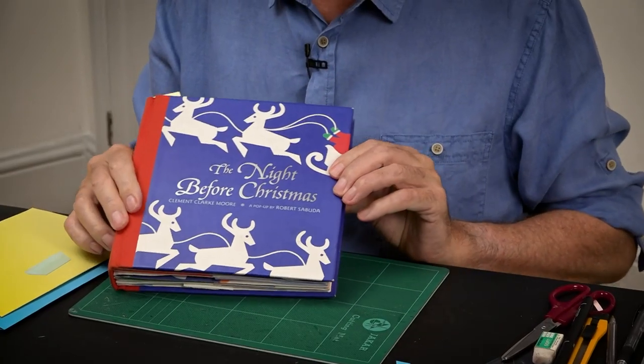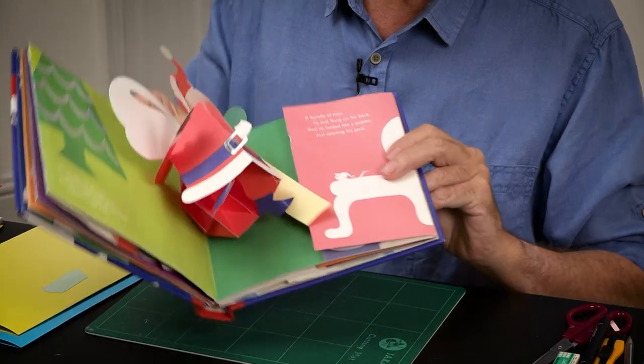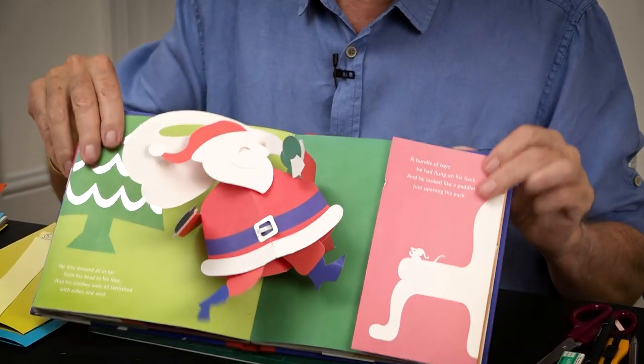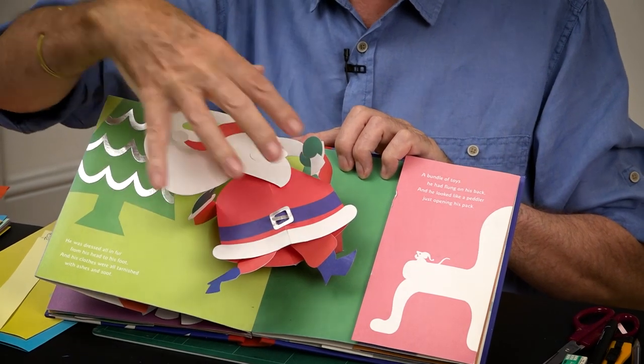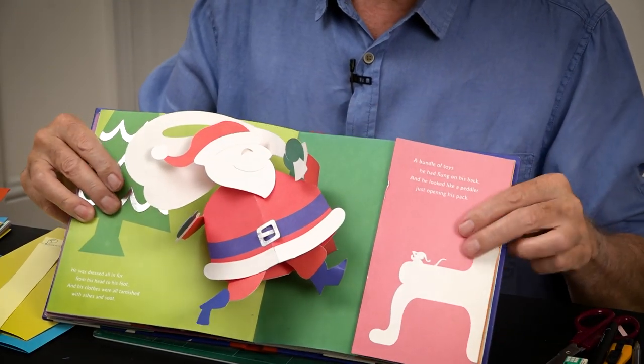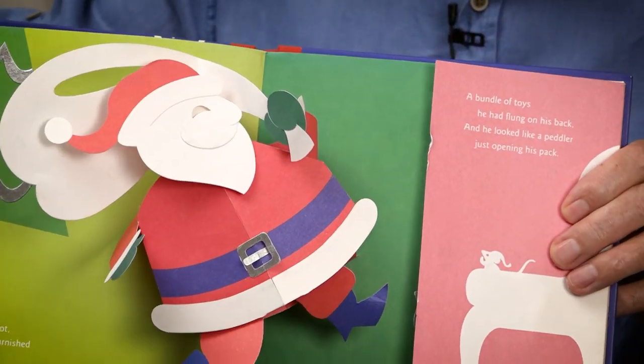So I've got three books that show examples of this. This is The Night Before Christmas by Robert Sabuda, and here, this is the mechanism. You can see it's a floating plane with a parallel fold built on top of it and all sorts of other bits making the figure. As it opens and closes, you can see it moves around into position.